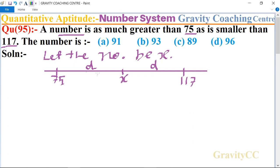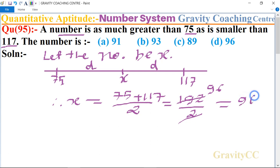So x is the midpoint between 75 and 117. So therefore mid value, so x equal to 75 plus 117 upon 2, equal to 192 upon 2, so it is cancelled by 96. So 96 which is the required answer.